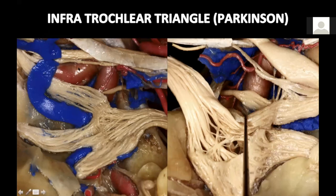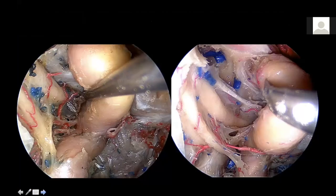The infratrochlear triangle is below the trochlea, over V1. This is a large space — Parkinson's triangle — which gives you access to the vertical part of the ICA and the meningohypophysial trunk, with the sixth nerve also present. From below, endoscopically, you can see this infratrochlear space. The third nerve is visible practically, but the fourth nerve is not possible to see in this specimen. This is basically the infratrochlear space.